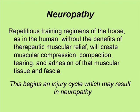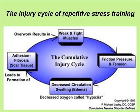Neuropathy. Repetitious training regimens of the horse, as in the human, without the benefits of therapeutic muscular relief, will create muscular compression, compaction, tearing, and adhesion of that muscular tissue and fascia. This begins an injury cycle which may result in neuropathy. The injury cycle of repetitive stress training begins with weak and tight muscles. This creates friction, pressure, and tension, which results in decreased circulation, swelling, and edema. Then adhesions and fibrous scar tissue are the end result.